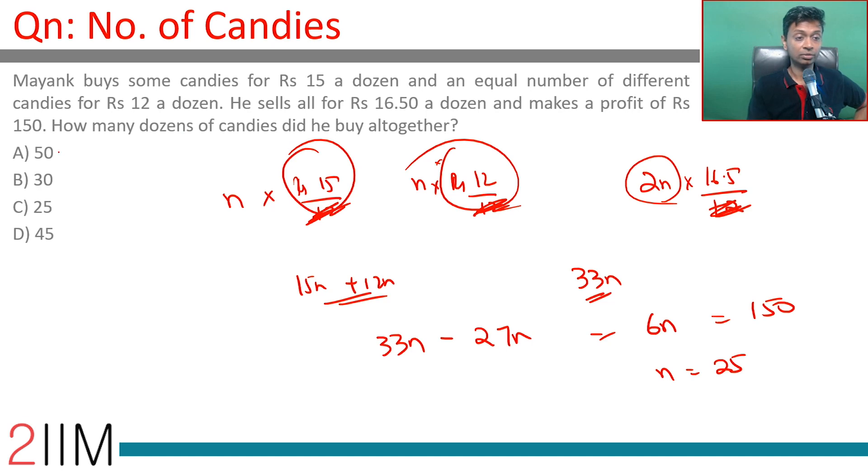Once again, n is 25, but the answer we're looking for is 2n, so it is 50.